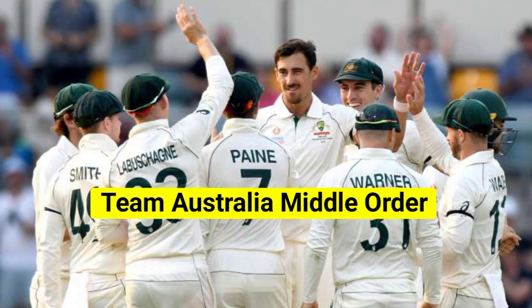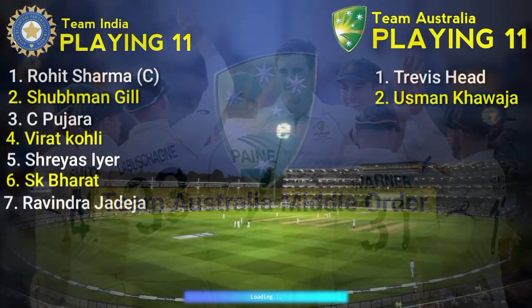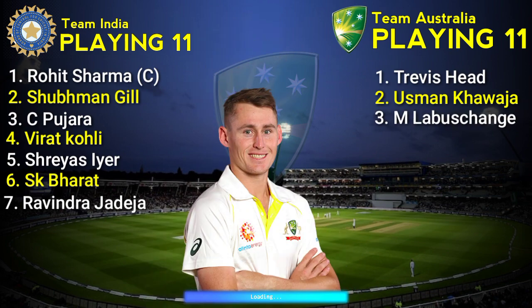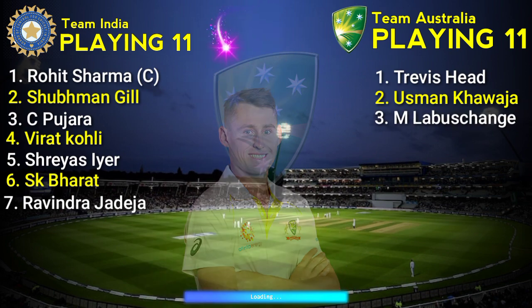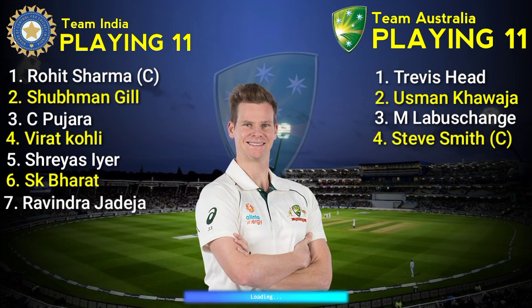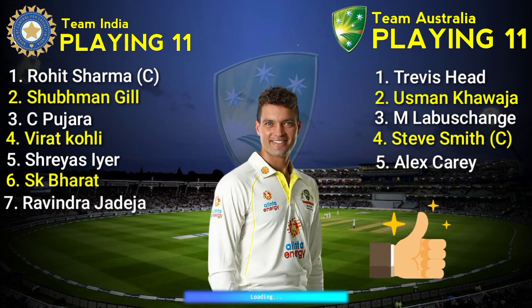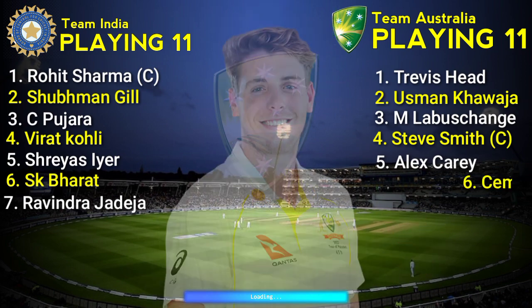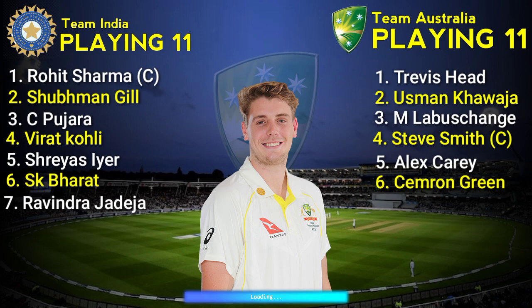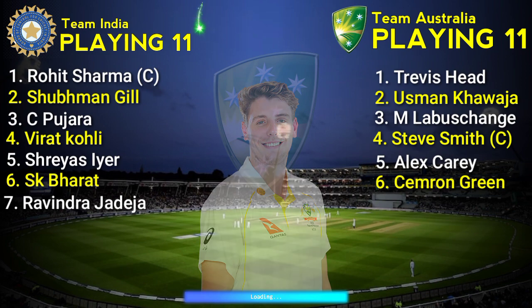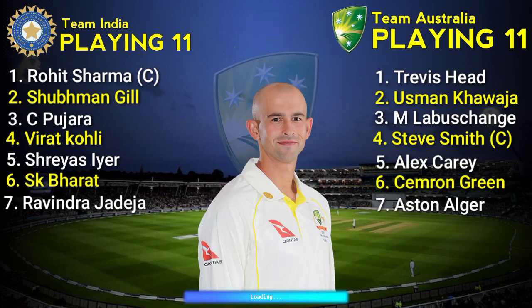Team Australia middle order. Number 3: Marnus Labuschagne, right hand batsman. Number 4: Steve Smith, right hand batsman and captain. Number 5: Alex Carey, left hand batsman. Number 6: Cameron Green, right hand all rounder. Number 7: Ashton Agar, left arm all rounder.